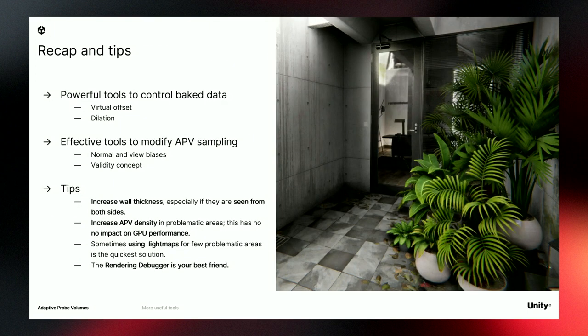Quick recap of tools: virtual offsets and dilation modify the baked data, while the normal bias, view bias, and validity concept modify how APV is sampled at runtime. If you still struggle with light leaking, increase wall thickness or boost APV resolution — APV resolution has no impact on GPU performance, only on bake time, disk space, and CPU memory. Sometimes for problematic objects, you can fall back to lightmaps. And remember, the rendering debugger is a great tool to understand what's happening and fix issues.